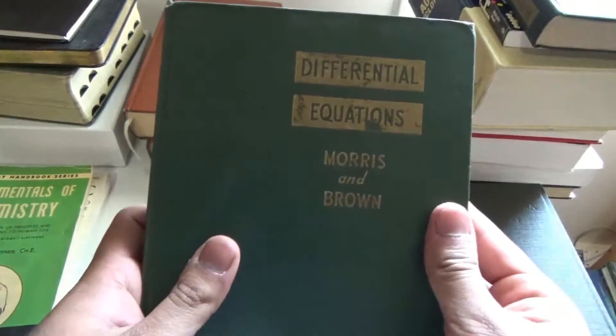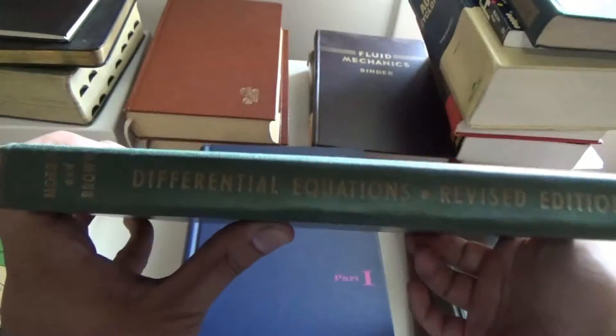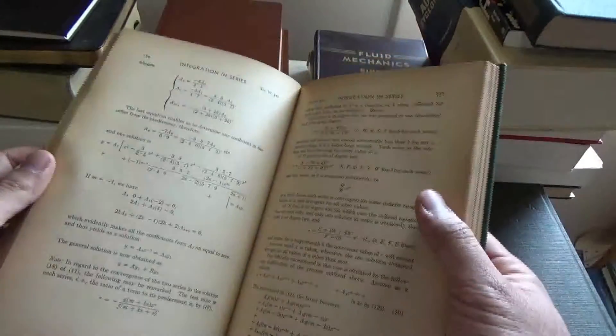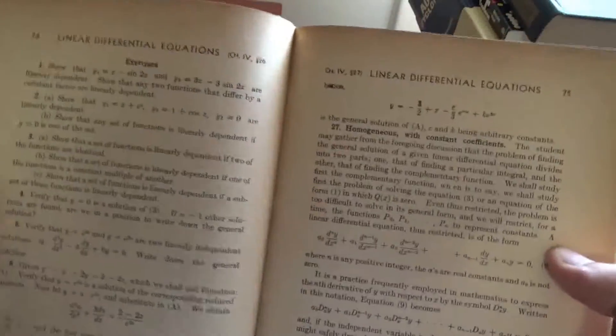Differential Equations by Morris & Brown, Revised Edition. So I guess back then, they didn't just release an edition every time they felt like it. They released editions when they needed revisions. And it was like, oh, I have the revised edition. Not the second, third, fourth, fifth, sixth, or seventh, or eighth edition.